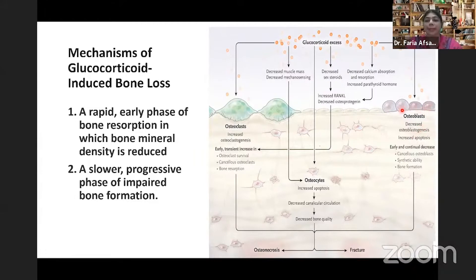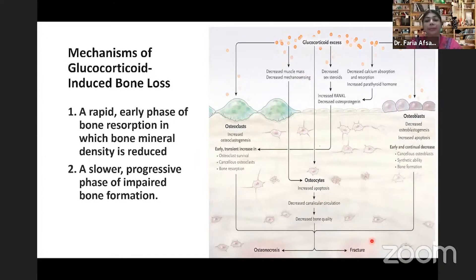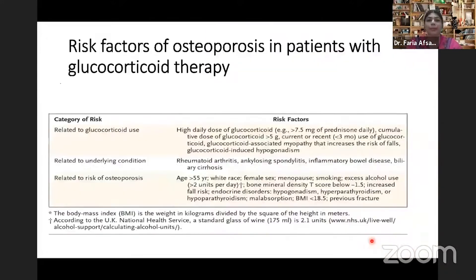Later on, regarding osteoblasts, glucocorticoids decrease osteoblastogenesis, causing an early and continual decrease in cancellous osteoblast activity and bone formation. Finally, on osteocytes, it increases apoptosis and causes osteonecrosis and fracture. Thus, glucocorticoid treatment increases both osteoporosis and fracture risk.